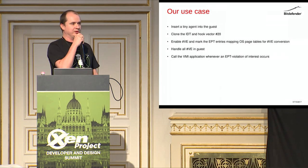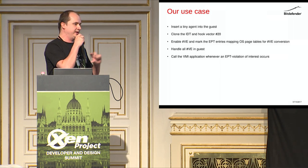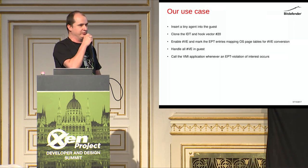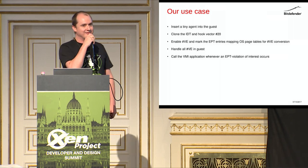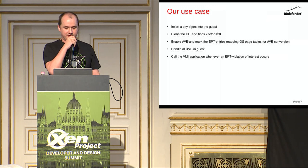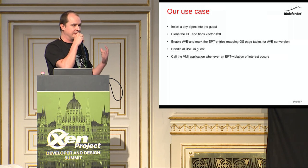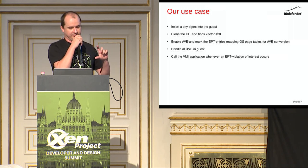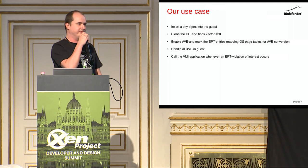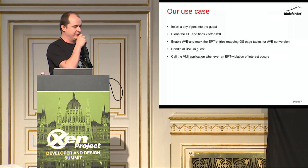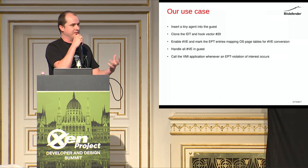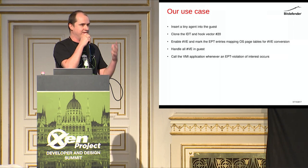In our specific case, what we do is inject a tiny agent inside the guest, protect it via EPT, and make sure nothing inside the guest can touch it. We clone the IDT — we did this because on 64-bit Windows there's a feature that periodically checks the integrity of the IDT, so putting in the handler for vector 20 would create quite a bug check. So we clone it, install the vector, and mark the EPT entries that match the mapping for the guest page tables — the page tables set by the kernel for itself or for the applications. We handle VE virtualized exceptions that have as a source the flips of accessed, disable, or dirty bits, and then pass to the VMI application — the actual security product — everything else, such as possible patches to the kernel code.